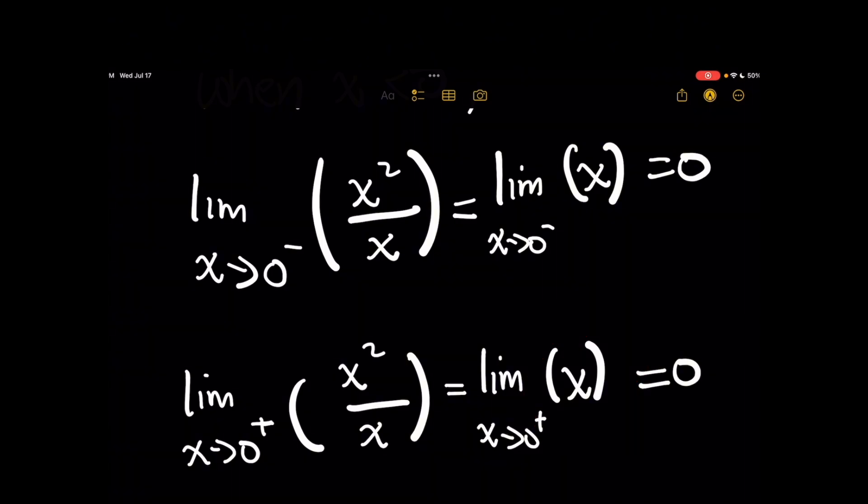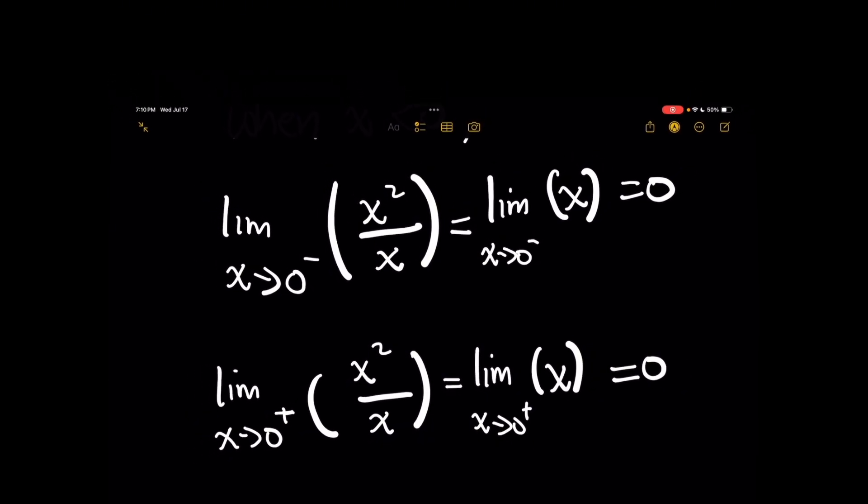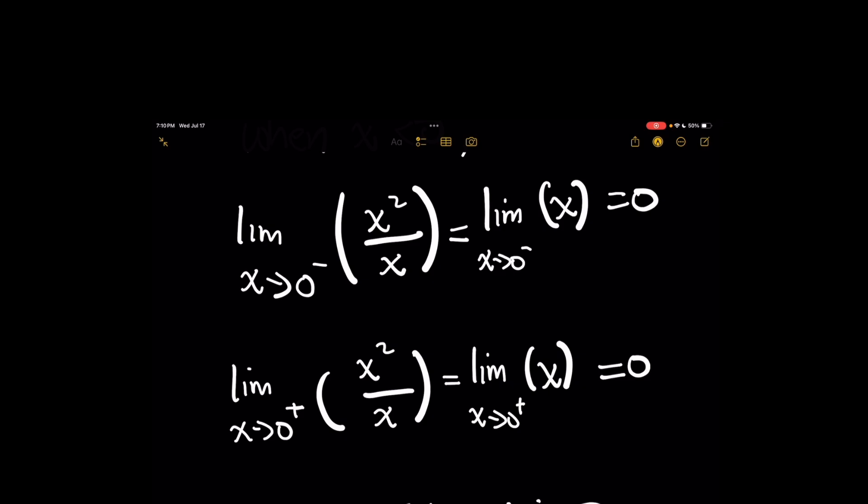Okay, so what does this tell us? It tells us one thing, and it tells us something that we have to also be careful about. We know then that the limit of x squared over x exists at the origin. It's simply 0. Because if you remember for the definition of a limit,